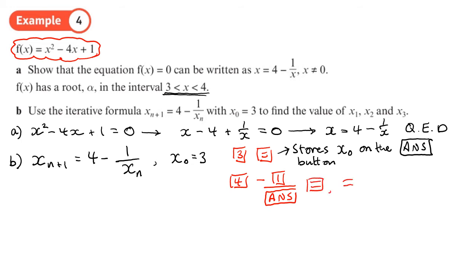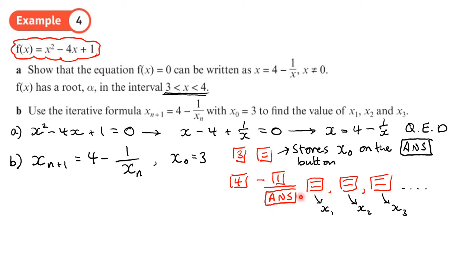Now all you do is press equals every time you want your next value of x. Pressing equals once gives you x1, pressing equals again gives you x2, pressing equals again gives you x3, and so on. The first time it runs, it puts three in as the starting value; when you press equals, whatever answer you get is stored as the new answer, so every time you press equals the x value updates to the latest result. This really saves a lot of time.